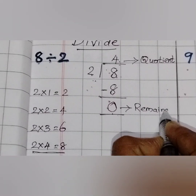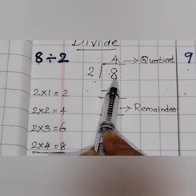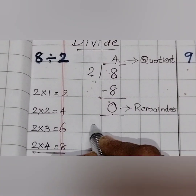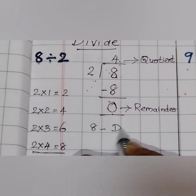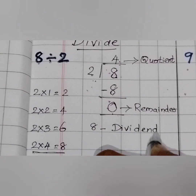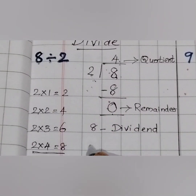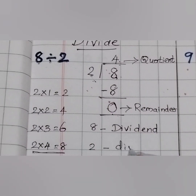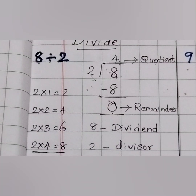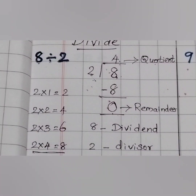Now let me write and show you all the things that we did. 8 is the dividend — that is the big number here. 2 is the divisor, the number we used to divide the dividend. 4 is the quotient, and 0 is the remainder.